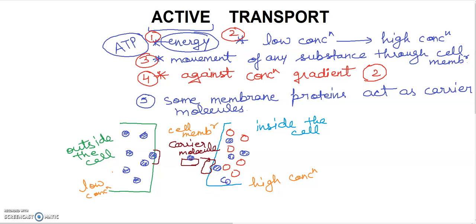The carrier molecule picks up molecules at the low concentration side, carries them to the high concentration side, then becomes empty and goes back to collect more molecules. This cycle repeats, which shows the role of a carrier molecule in active transport. Active transport and passive transport are different — passive transport goes from higher to lower concentration without any energy, which is the best example of diffusion.